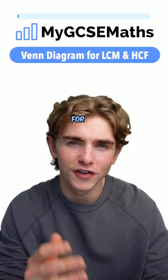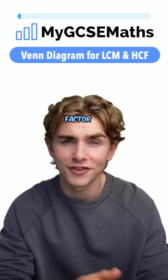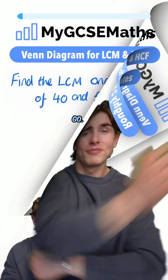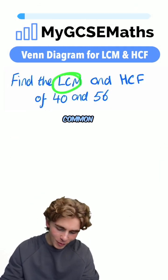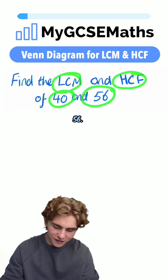GCSE Math's Venn Diagram Method for Lowest Common Multiple and Highest Common Factor in roughly two minutes. Let's go. Let's say we want to find the lowest common multiple and highest common factor of 40 and 56.